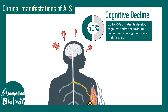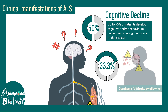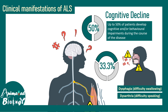About 50% of patients develop cognitive or behavioral impairments in the advanced stage of the disease. About 33% — that means one-third of the population — have problems like dysphagia, meaning difficulty in swallowing, and dysarthria, meaning difficulty in speaking.